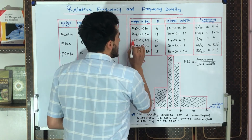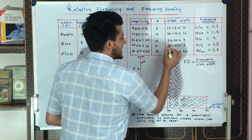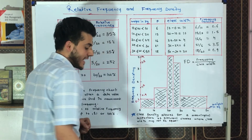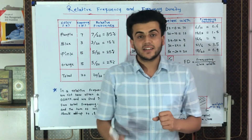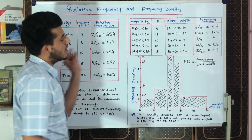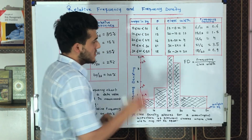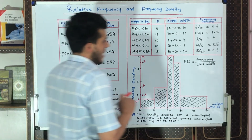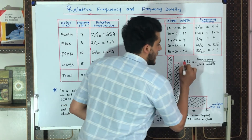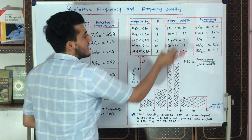Continuing: 24 minus 20 is 4, 30 minus 24 is 6, and 50 minus 30 is 20. We find that every class interval is different and each has a significant impact on the frequency distribution. To find the frequency density, we use the formula: frequency density equals frequency divided by class width.